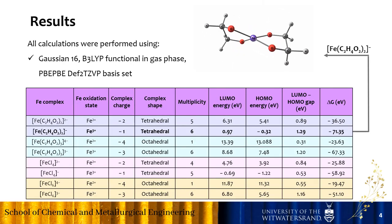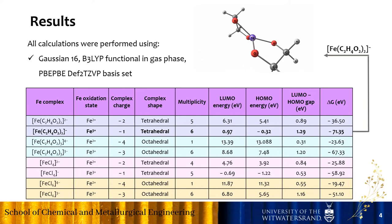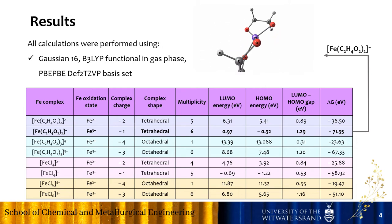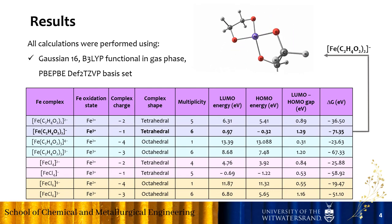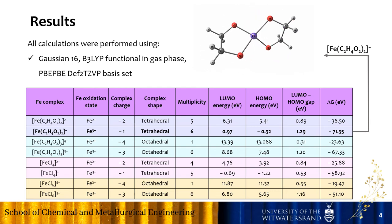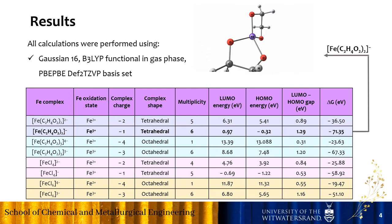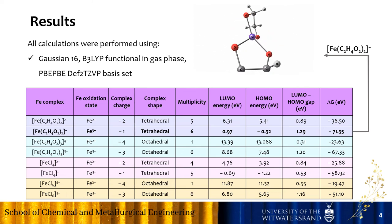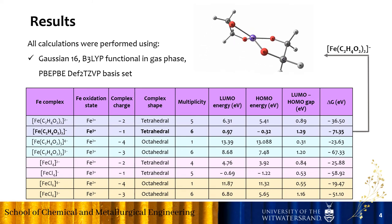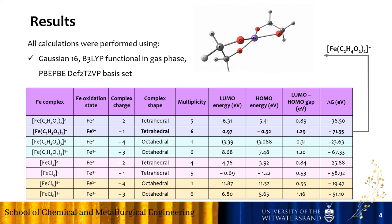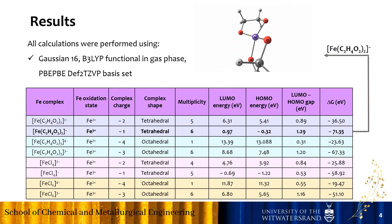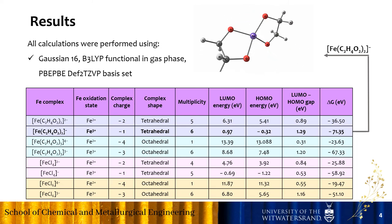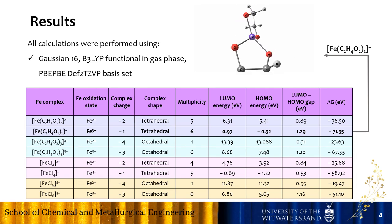After calculating the HOMO-LUMO gap between these complexes and also the Gibbs free energy, it was revealed that all eight complexes have negative Gibbs free energy. But by comparing these complexes more precisely, it shows that the combination of iron 3 with two ethylene glycol as an O-donor complex has the largest HOMO-LUMO gap, which makes the complex more stable, and it has the most negative Gibbs free energy of minus 71.35, which makes this complex most likely to form.